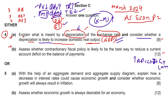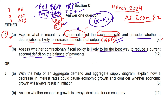Question 4B again requires Assessment Objectives 1, 2 and 3. You have to identify the knowledge points, which include: fiscal policy, contractionary fiscal policy, deficit current account, and balance of payments. You have to describe each of these terms as Assessment Objective 1.